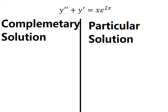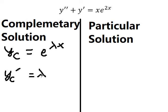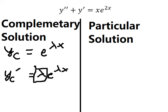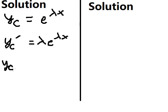For the complementary solution, I will put yc equals e to the power of lambda s. The first derivative of this is lambda times e to the power of lambda s, because the first derivative of e to the power of lambda s keeps e to the power of lambda s, and the derivative of lambda s gives lambda. The second derivative gives lambda squared times e to the power of lambda s.